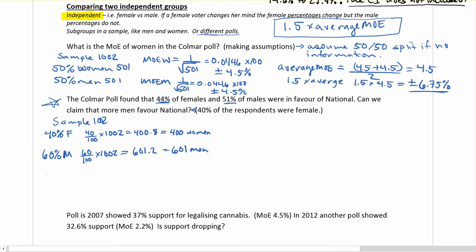So what we need to do now is find our margin of error for each of these, the men and the women. So the MOE for the females is going to be 1 divided by the square root of 400, which is equal to 0.05 times that by 100 to get our percentage. And we get plus or minus 5% for the females.